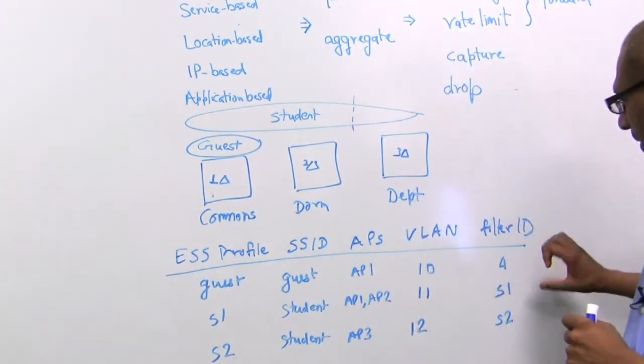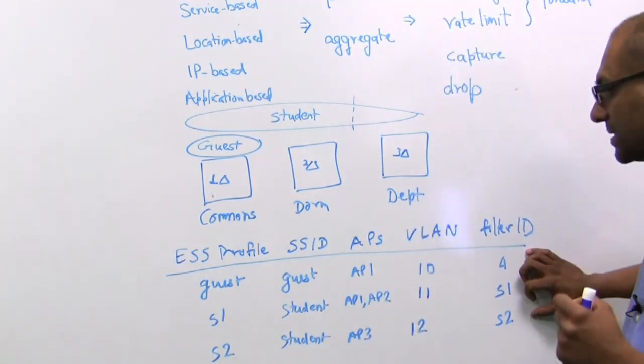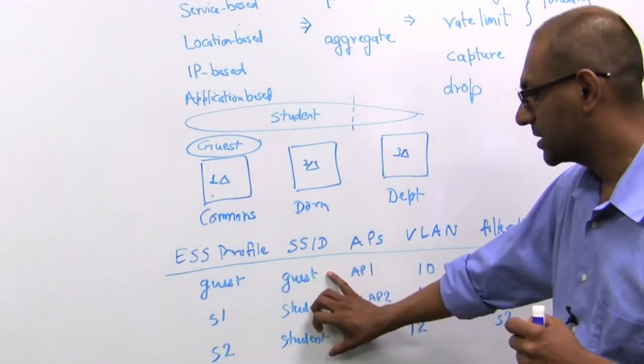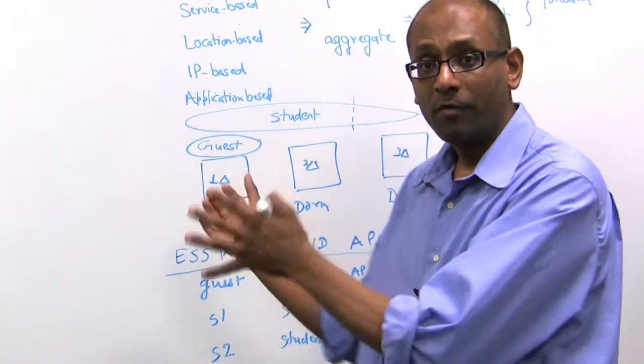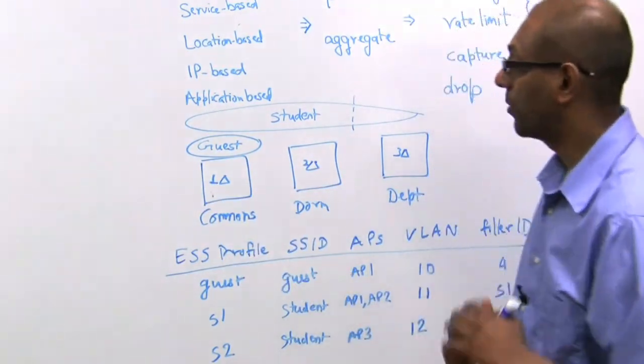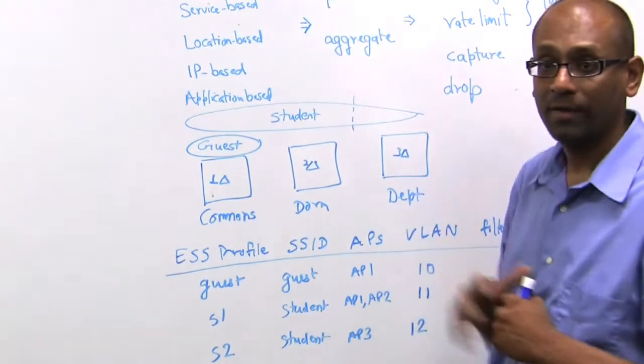So a user might get their filter ID or policy tags based on the service and location that they connect to, but this can further be overridden by means of a back-end policy engine, and that provides the additional user-level construct.